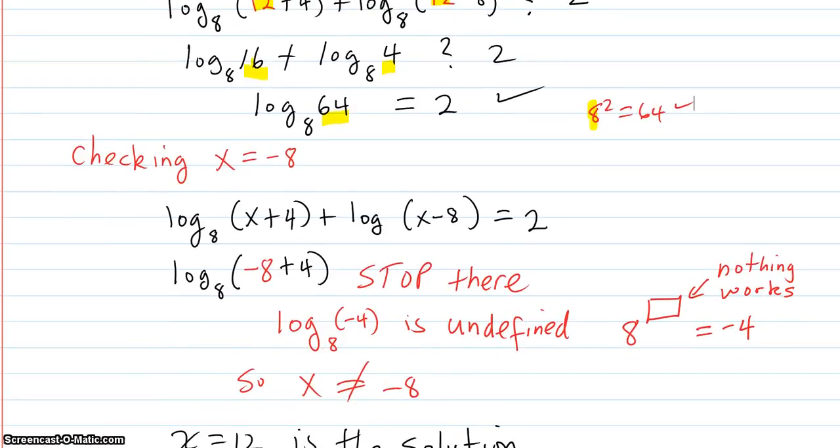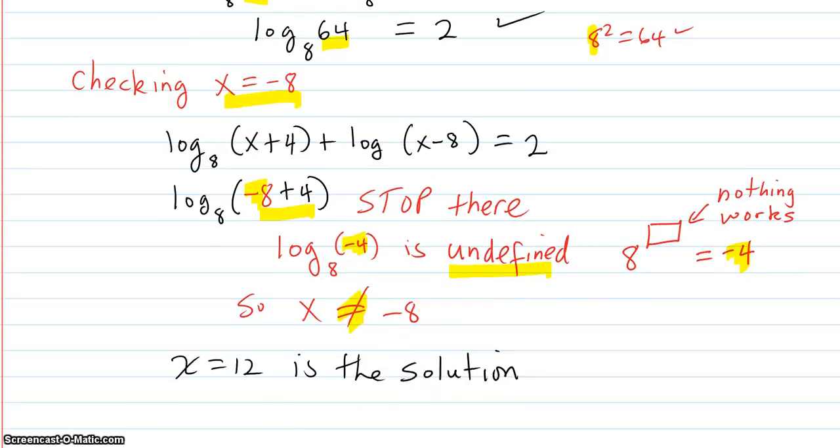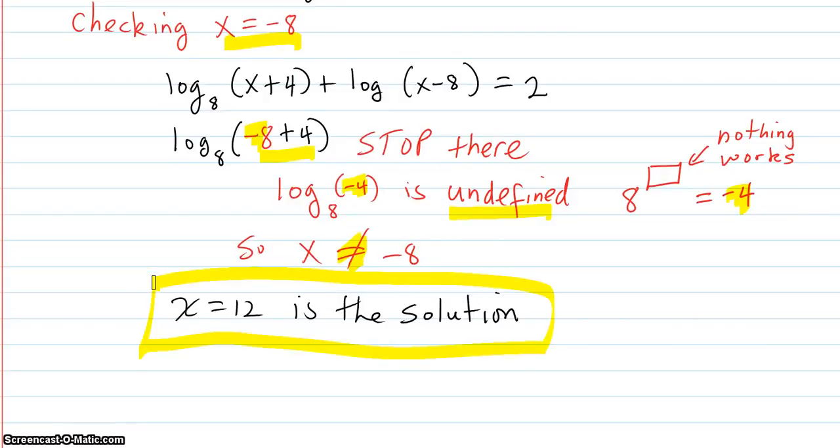Okay, check x equals negative 8. Put that in for x. You can stop right there, because negative 8 plus 4 is negative 4. And as explained in previous videos, there's nothing you can raise 8 to in order to get negative 4. Nothing works up there. Even if you have a negative number, that just means reciprocal. That's not going to make it negative. So, this is undefined. So, x is not going to be negative 8. So, x equals 12 is the only solution.